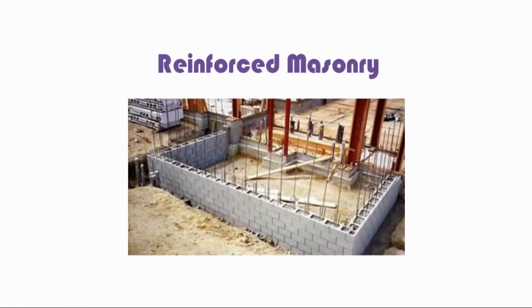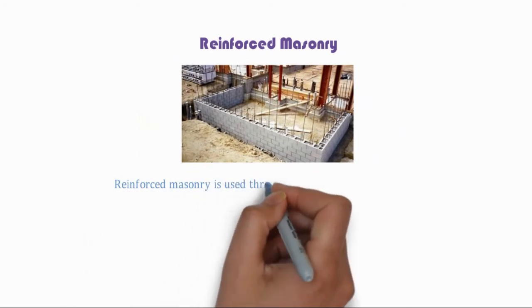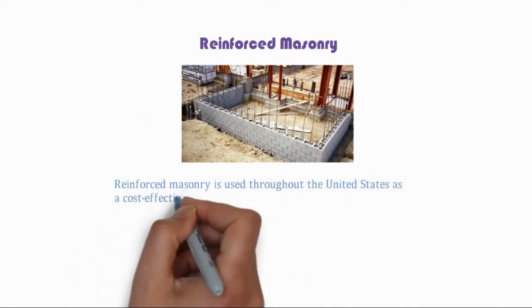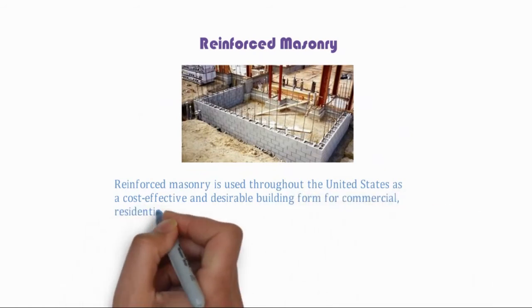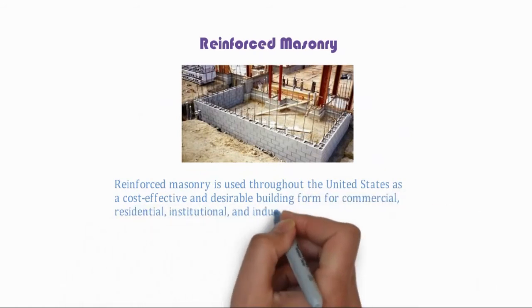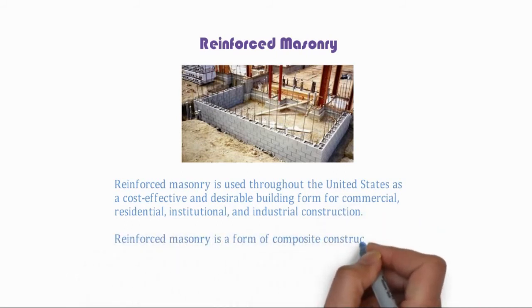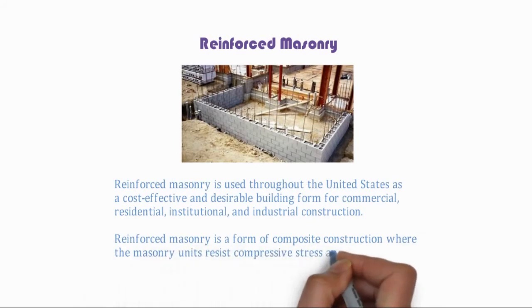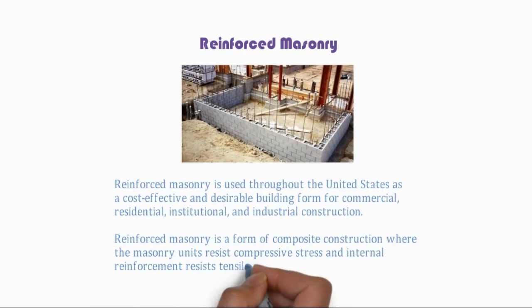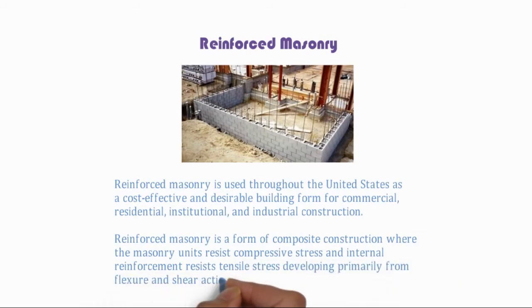Reinforced masonry is used throughout the United States as a cost-effective and desirable building form for commercial, residential, institutional, and industrial construction. It is a form of composite construction where the masonry units resist compressive stress, and internal reinforcement resists tensile stress, developing primarily from flexure and shear actions.